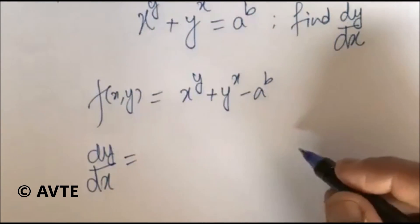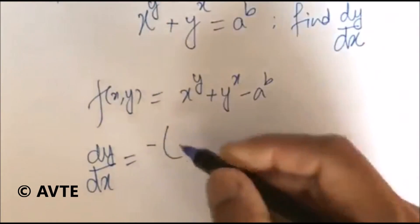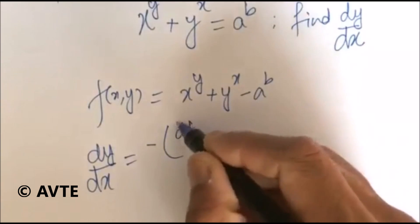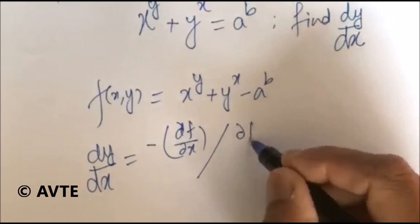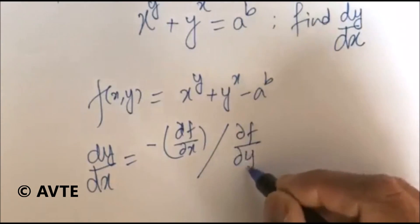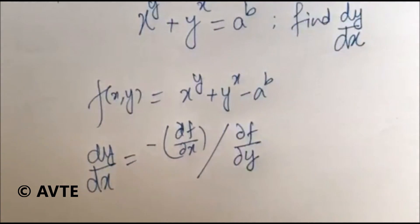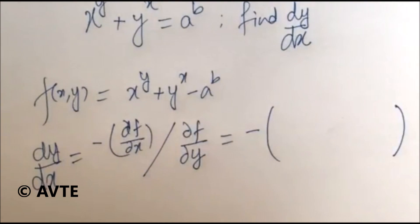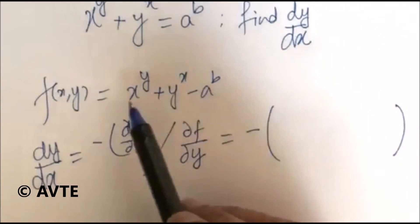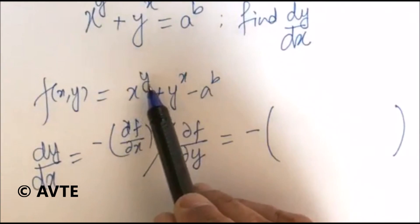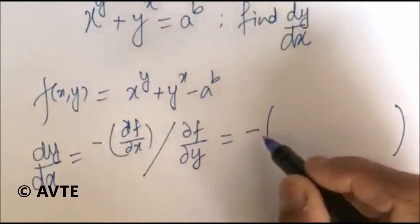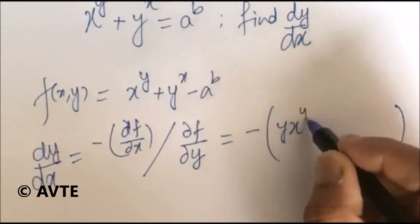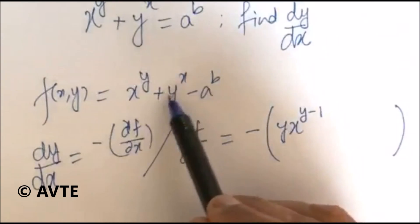I'm using the formula: dy by dx equals the partial derivative of the function with respect to x, divided by the partial derivative of the function with respect to y. When I differentiate with respect to x keeping y constant, x to the power y acts as an algebraic function, so the answer comes as minus y times x to the power y minus 1.